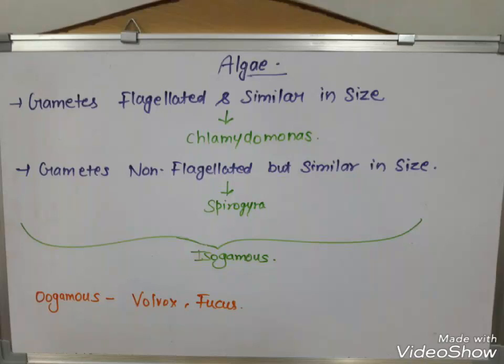Next is gametes. Flagellated gametes that are similar in size are found in Chlamydomonas. Non-flagellated gametes that are also similar in size are found in Spirogyra.